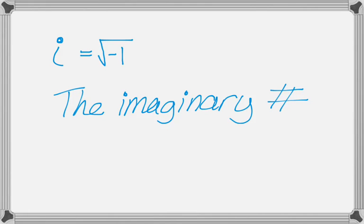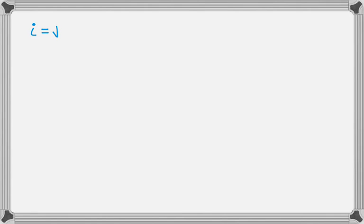This video is about raising i to integer powers. We're going to have a couple of definitions and work things out from there. First, i is defined as the square root of negative 1. It comes up in a lot of contexts where you need to take the square root of a negative number, so it's been defined as this new number called i. What we want to do is square that.